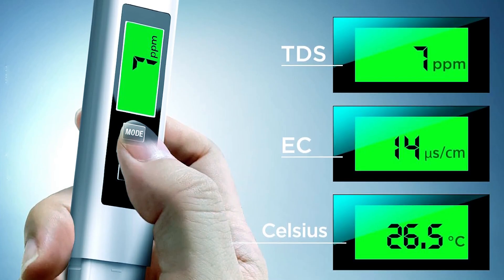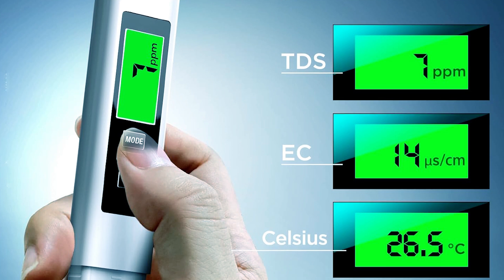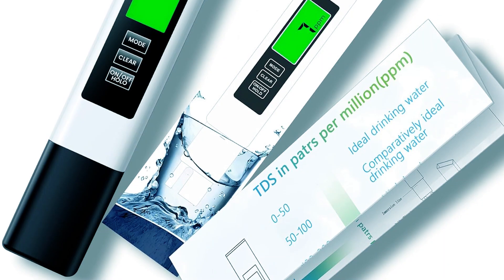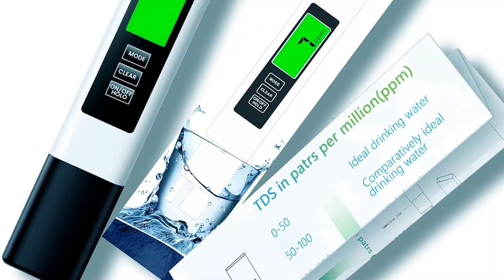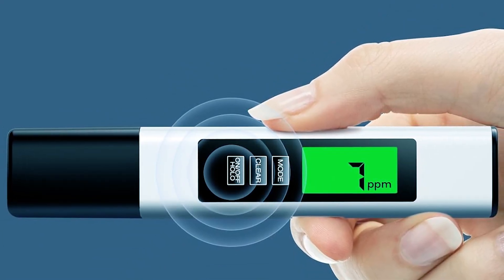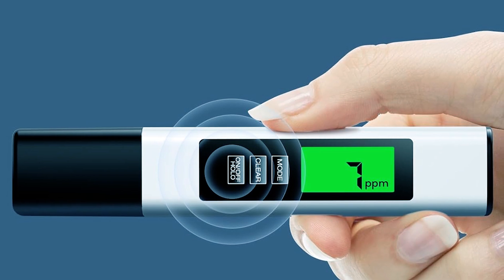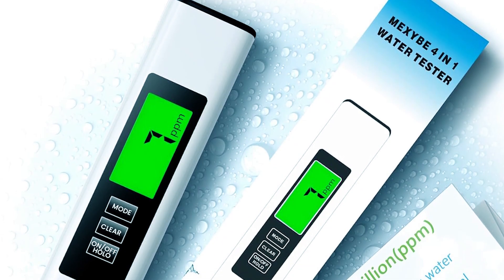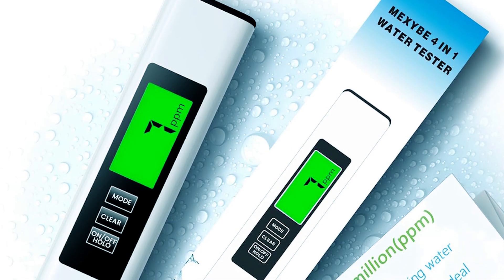The large backlit LCD screen makes reading results easy, and the auto-lock function simplifies use. Factory calibrated, it includes a hold function for easy data capture and an auto-off feature to conserve battery life. This meter offers a practical solution for those needing detailed water quality analysis.